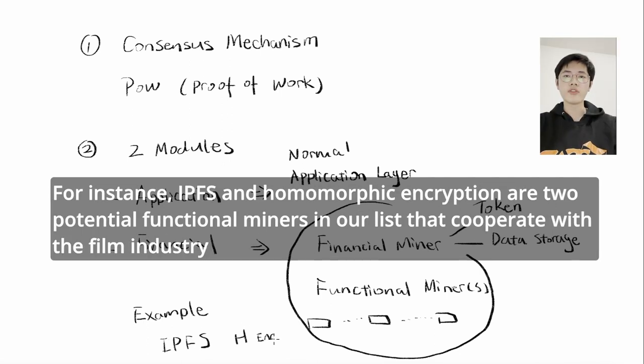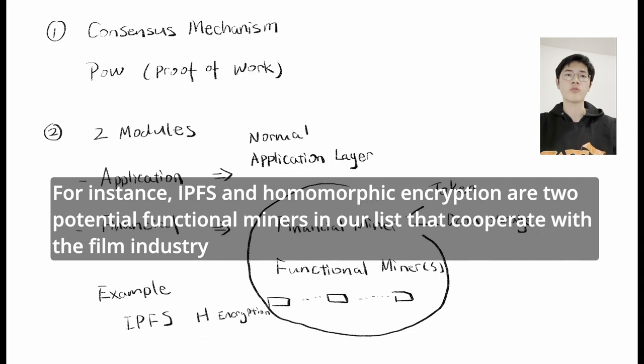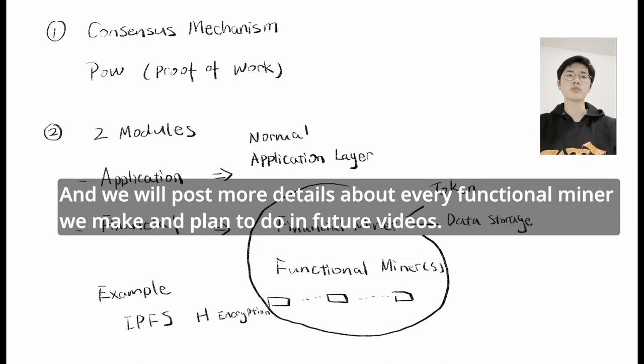For instance, IPFS and homomorphic encryption are two potential functional miners in our list that cooperate with the film industry. We will post more details about every functional miner we make and plan to do in future videos.